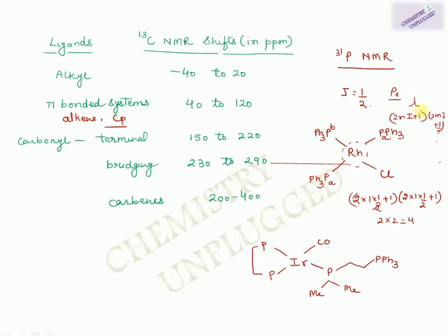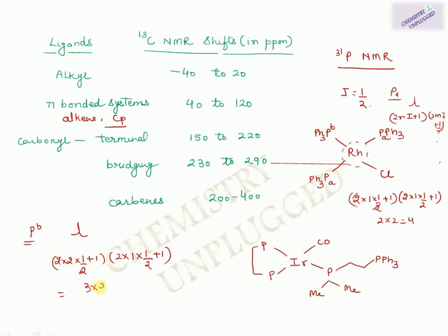For the PB peak in Wilkinson's catalyst, it is split by two PA phosphorus atoms and one rhodium atom: (2 × 2 × 1/2 + 1) × (2 × 1 × 1/2 + 1) = 3 × 2 = 6 peaks. So PA gives 4 lines and PB gives 6 lines in the ³¹P NMR spectrum.